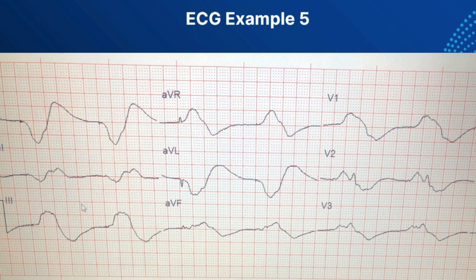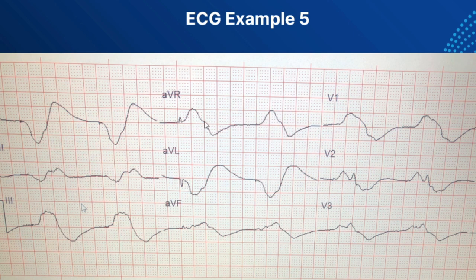ECG Case 5: this patient was found unresponsive by his wife — no dialysis or anything like that. The 12-lead is extremely wide. This is one of the most severe cases of hyperkalemia I've had. It's the kind of 12-lead that makes anyone look to the sky and hope all the leads are on right. But all the leads were on correctly — this is not artifact. This is very extreme hyperkalemia. You can see the sine wave here, very bradycardic.